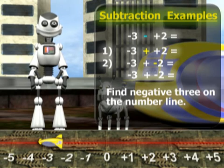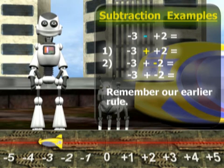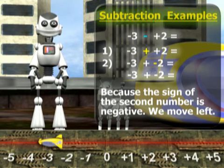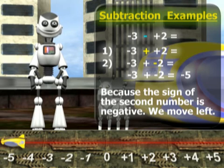Find negative three on the number line. Remember our earlier rule. Because the sign of the second number is negative, we'll be moving to the left. We end up on negative five on the number line.